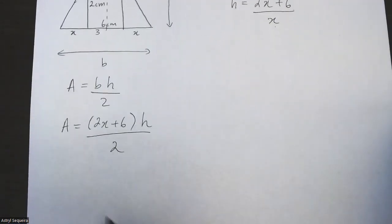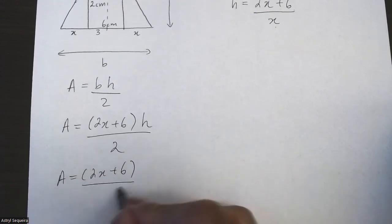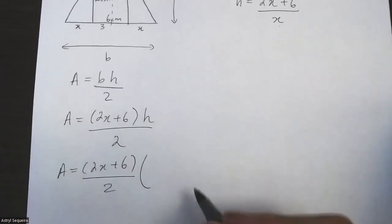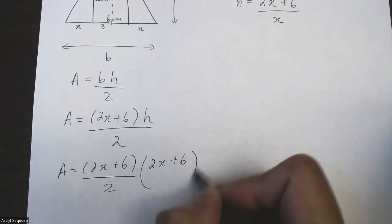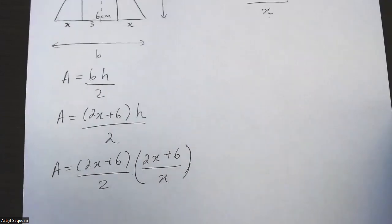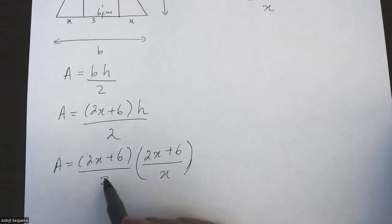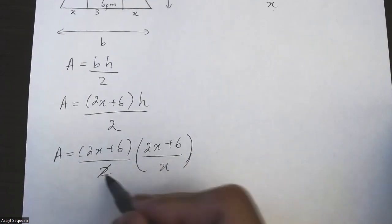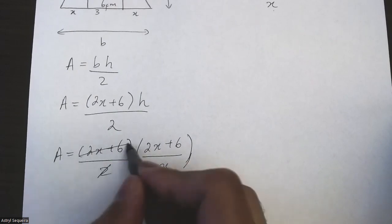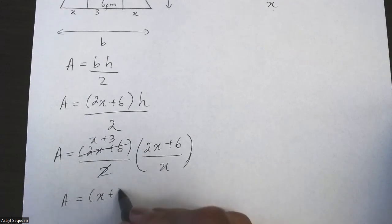I'm going to come back here and substitute this over here. So A equals 2x plus 6, I'll put the over 2, and then I'll just put the height over here on the side, which is again 2x plus 6 over x. Now we can simplify this a bit. We can cancel out first if you want to get rid of a 2, so I'll cancel this 2 and make it x plus 3.